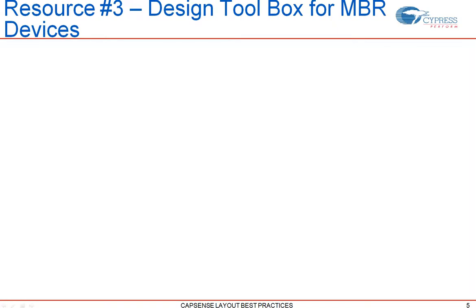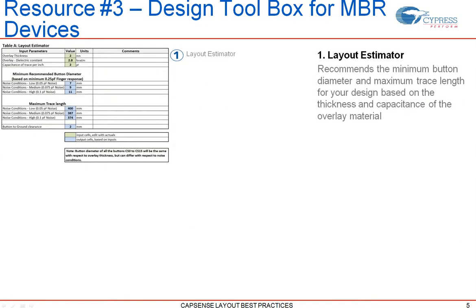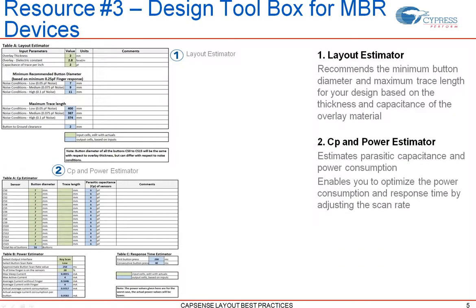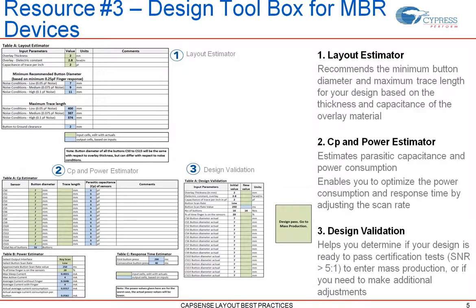The third resource is the Design Toolbox. For the Capsense Express MBR family of devices, we also have design tools to help you with layout considerations. The MBR Design Toolbox is a simple interactive spreadsheet with the following sections: first, a Layout Estimator, which provides specific layout dimensions based on end system requirements; second, a CP and power consumption calculator, which provides feedback on whether the button CP is within range and offers a method to optimize power consumption; and third, Design Validation, which validates whether the end system design is within the design toolbox guidelines and ready for production. Recommendations for correction are provided for buttons that fall outside the guidelines.